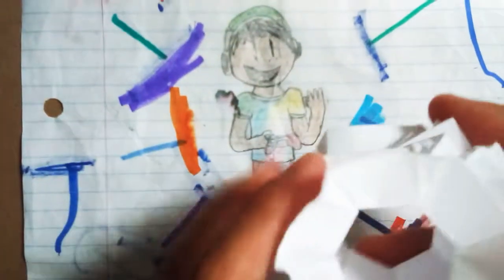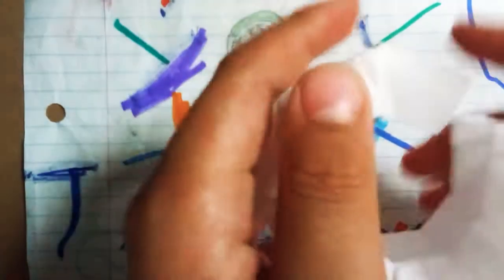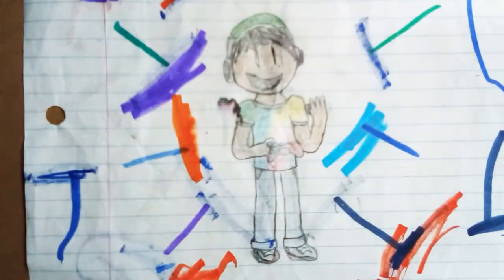This next one is an origami transforming lantern frisbee. So, when you squash it, it is more of a frisbee, and you can throw it.